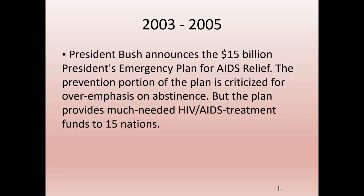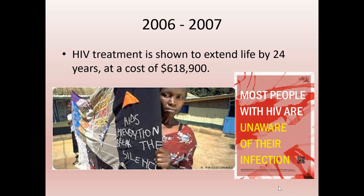But the plan also provides much-needed HIV/AIDS treatment funds to 15 nations. In 2006 to 2007, HIV lifetime treatment is shown to extend life by 24 years — but this is the cost. This is one reason why wealthy celebrities and wealthy people have survived the AIDS epidemic.